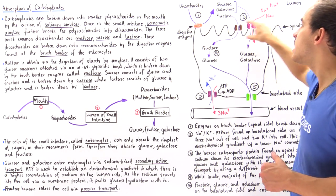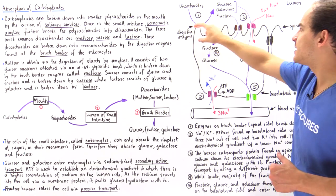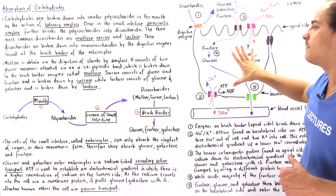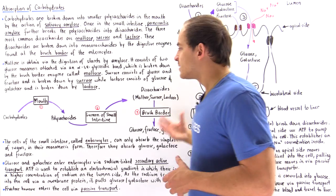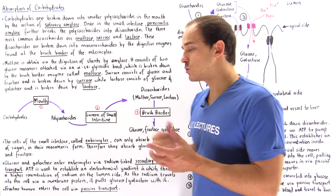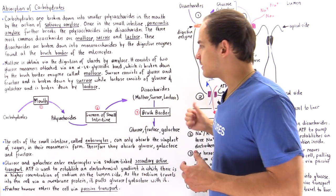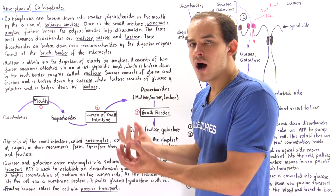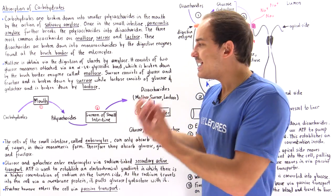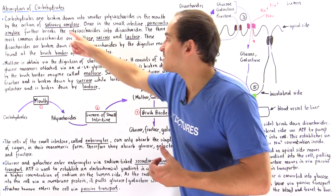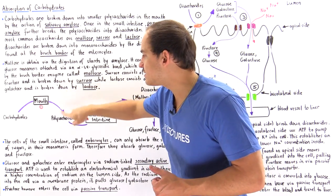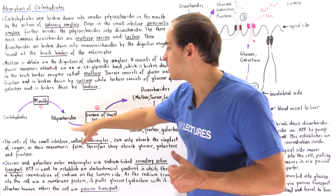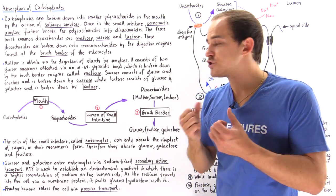Lactase is also found on the brush border attached to the membrane on the apical side of our enterocytes. To summarize, let's take a look at the following diagram. We eat carbohydrates such as starch, and in the mouth, salivary amylase breaks down the carbohydrates — very large molecules — into smaller polysaccharides.